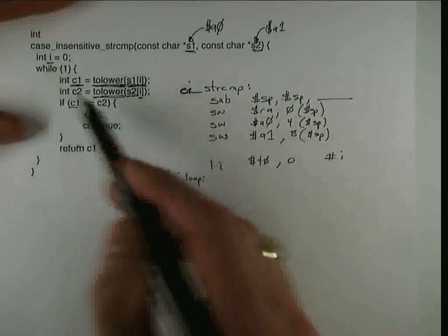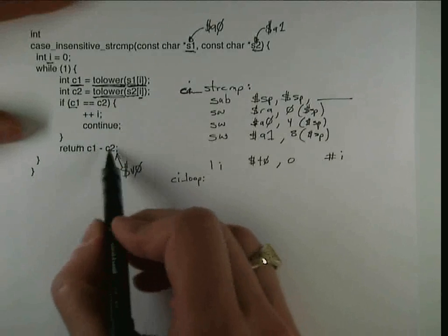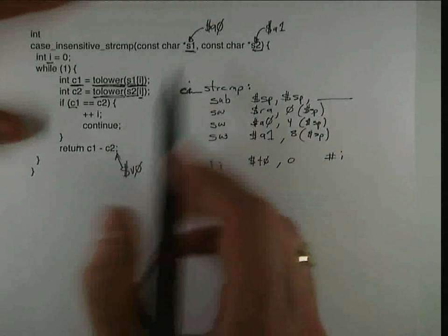If they're the same, we go on and look at the next character. But the first character that diverges, we're going to subtract the value of that character from the first string to the second string.